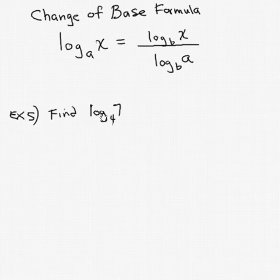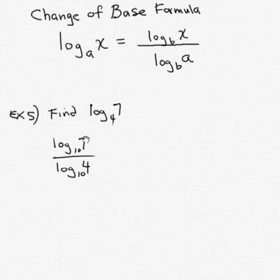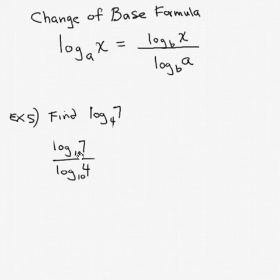So to find the log of seven base four, we can approximate it in our heads. Four to the first power is four. Four squared is sixteen. My answer is between one and two. One point something. But to go to four decimal place accuracy, let's use the change of base theorem. So that says that's the same thing as the log of seven divided by the log of four. The previous base is now a number. And we pick a new base. And since ten is on our calculators, that's the wise choice.